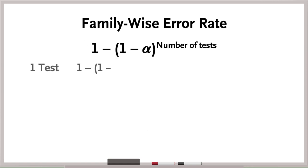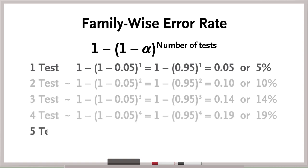When we conduct a single test at an alpha of .05, the family-wise error rate is .05, or 5%. By the time we conduct 5 tests at an alpha of .05, there's now a greater than 20% chance of observing one or more false positive results.